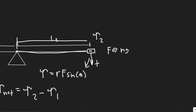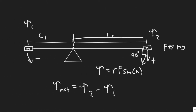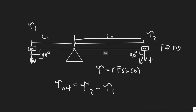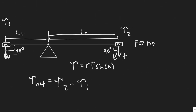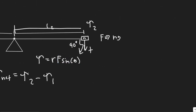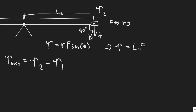The lever arm is the rod itself, and the force acts straight down due to gravity. The angle between the lever arm and the force is 90 degrees for both masses. Since sine of 90 is just 1, the torque simplifies to just L times F — the length times the force.